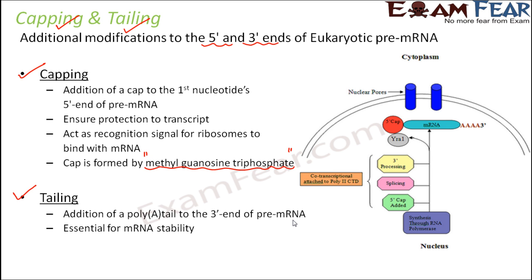The tail is essential for mRNA stability — it provides stability to the entire mRNA structure. It is called the poly-A tail because 'poly' means many and 'A' stands for the adenyl group, so multiple adenine groups are added towards the 3' end. On the 5' end the cap is added, and towards the 3' end the poly-A tail is added, so the mRNA is well protected on both ends. Additionally, from the middle, RNA splicing has happened and the introns have been removed. Only then do we call this mRNA the mature mRNA, and it is ready to move out of the nucleus into the cytoplasm.